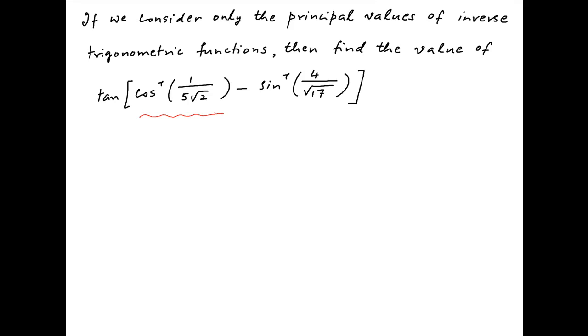Let's assume that cos inverse of 1 upon 5 root 2 is equal to alpha, and sin inverse of 4 upon root 17 is equal to beta.